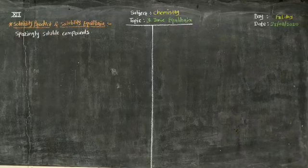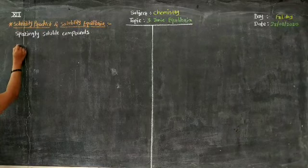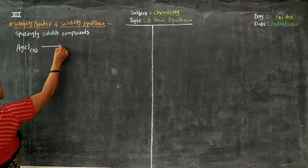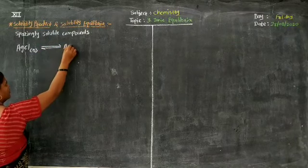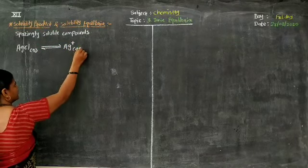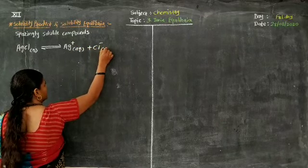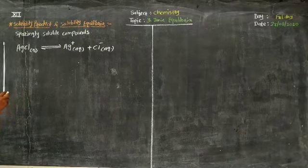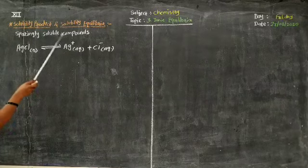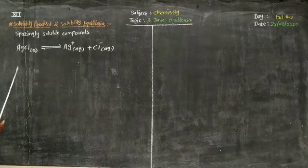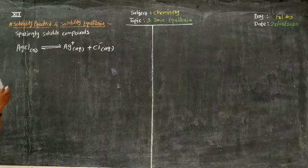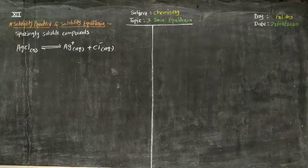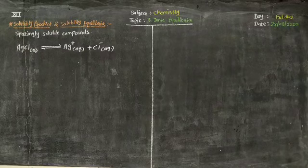This equilibrium can be represented as: AgCl (solid) at equilibrium gives Ag+ (aqueous) plus Cl− (aqueous). Whenever there is equilibrium between the undissolved salt and the soluble ions, this equilibrium is known as solubility equilibrium. By applying the same rule we studied before for weak acids and weak bases.